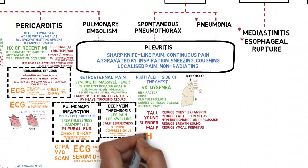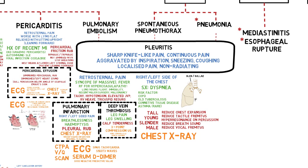Next is pneumothorax. Use of chest X-ray for diagnosis of pneumothorax is sufficient; in fact, we can arrive at the diagnosis by clinical examination alone. However, chest X-ray helps to rule out other underlying causes that may lead to pneumothorax, such as old tuberculosis. Pneumothorax is seen as a visible pleural line with an area devoid of vascular markings lateral to it. In tension pneumothorax, there will also be mediastinal shift.